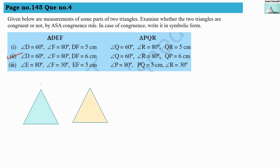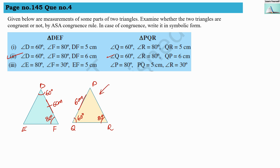Second sub-part: triangle DEF with angle D = 60°, angle F = 80°, DF = 6 cm; and triangle PQR with angle Q = 60°, angle R = 80°, QP = 6 cm. For triangle PQR, side QP is not included between angles Q and R — it is not sandwiched between the two angles. So ASA criteria cannot be established, and these two triangles are not congruent.